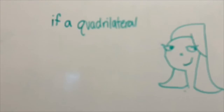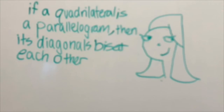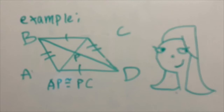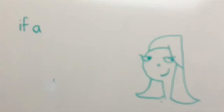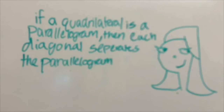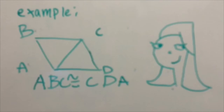Diagonals of a parallelogram: if a quadrilateral is a parallelogram, then its diagonals bisect each other. So in parallelogram ABCD, AP is congruent to PC and BP is congruent to PD because their diagonals bisect each other. If a quadrilateral is a parallelogram, then each diagonal separates the parallelogram into congruent triangles. So in parallelogram ABCD, triangle ABC is congruent to triangle CDA.